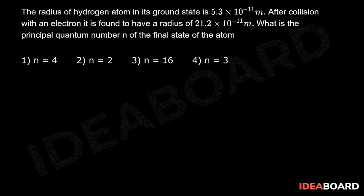Now interestingly, they have provided you the value of a₀. a₀ is equal to radius of hydrogen atom in ground state, which is 5.3 × 10⁻¹¹ meters. Correct.